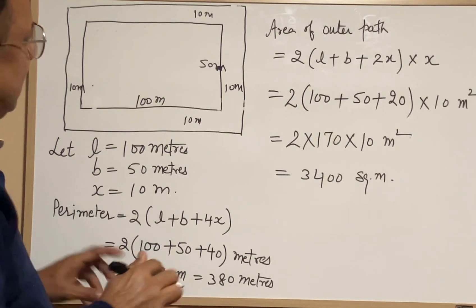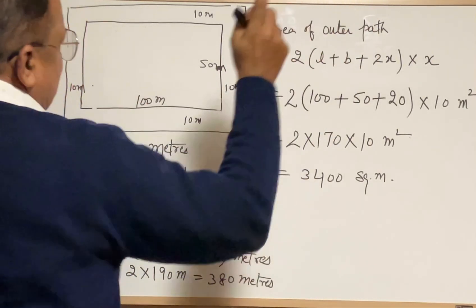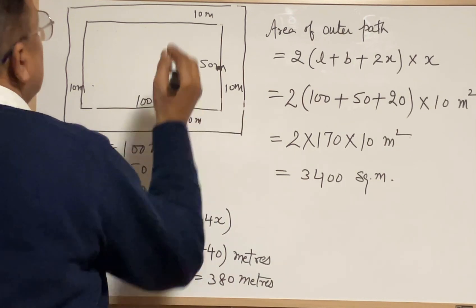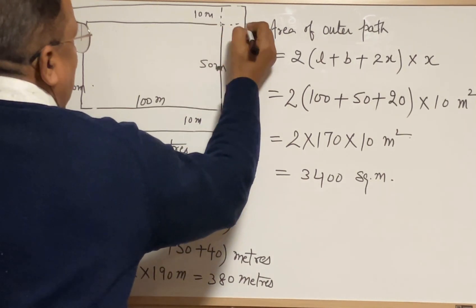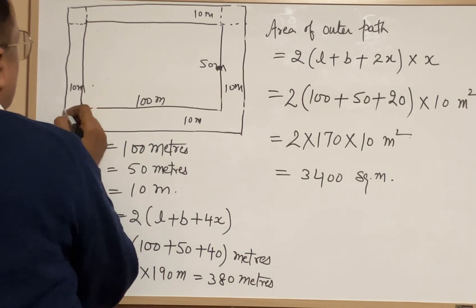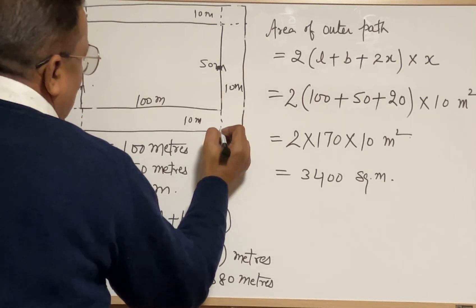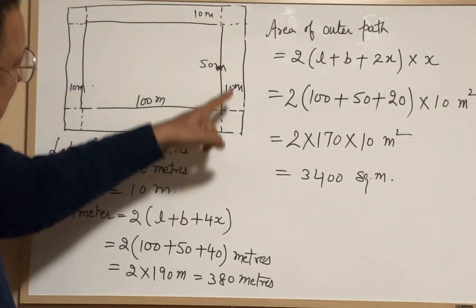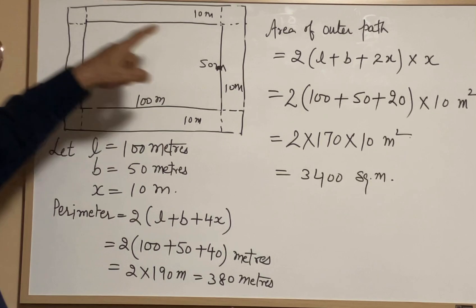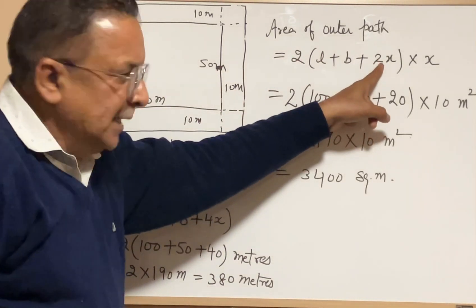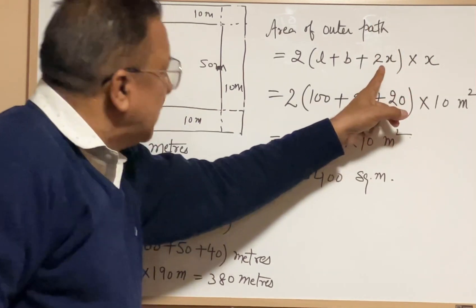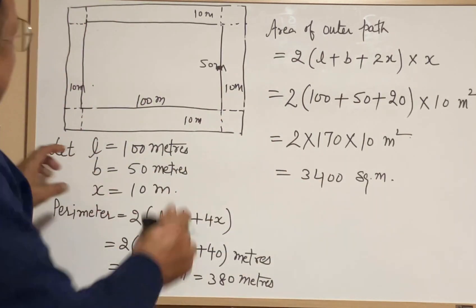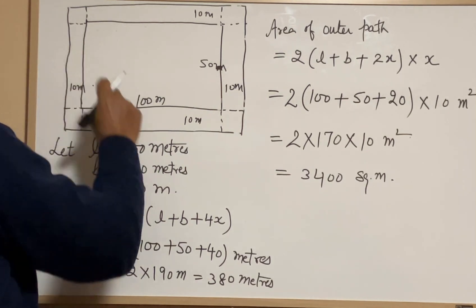Similarly for the area: the path area means we take the rectangular strip areas. At the four corners there are four squares, each with area x squared. So the four corner squares contribute 4x squared. Taking x equal to 10, that is 4 times 100 equals 400. Adding the strip areas gives a total area of 3400 square meters.